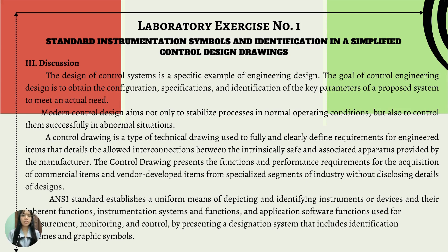For the discussion of laboratory exercise number one, the design of a control system is a specified example of engineering design. The goal of control engineering design is to obtain the configuration, specification, and identification of the key parameters of a proposed system to meet an actual need. Modern control design aims not only to stabilize processes in normal operating conditions, but also to control them successfully in abnormal situations. By presenting a designation system that includes identification schemes and graphic symbols, the ANSI standard establishes a uniform means of depicting and identifying instruments or devices, their inherent functions, instrumentation systems and functions, and application software functions used for measuring, monitoring, and control.